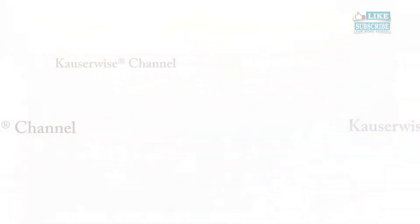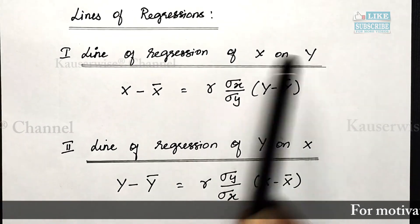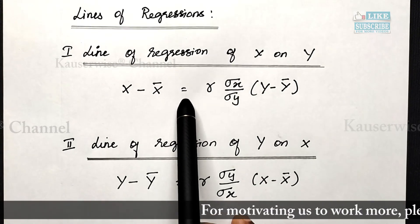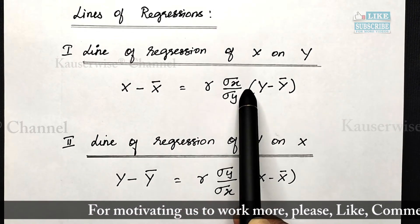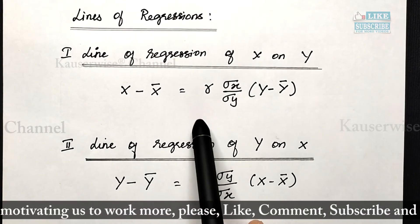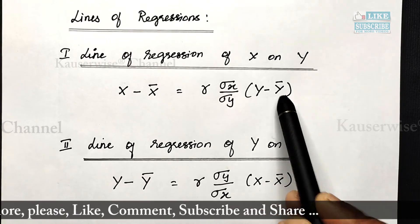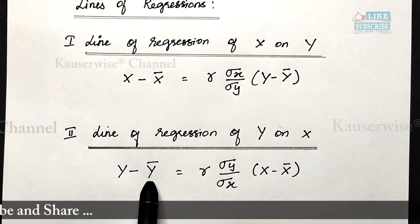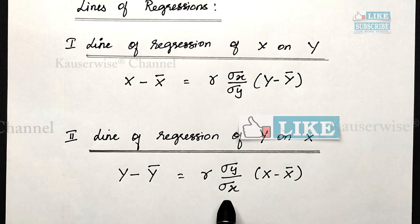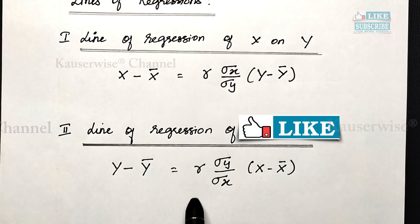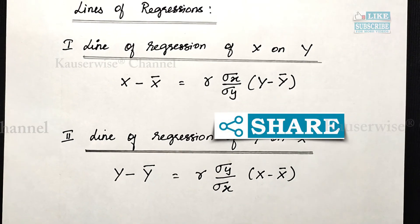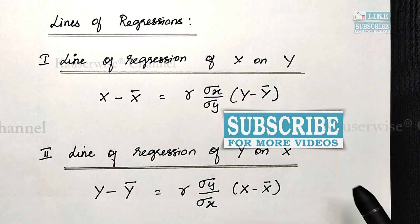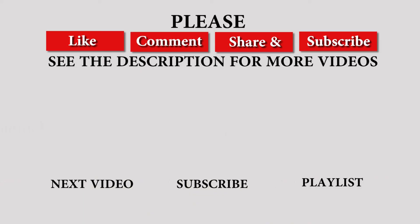Looking at the regression formulas: the line of regression of x on y is x minus x-bar equals b(xy) times (y minus y-bar). The line of regression of y on x is y minus y-bar equals b(yx) times (x minus x-bar). Based on these formulas, we are going to see numerical problems in the upcoming series. You can find the links in the description box. Hope you like this video — please like, comment, subscribe, and share with your friends. Thank you.